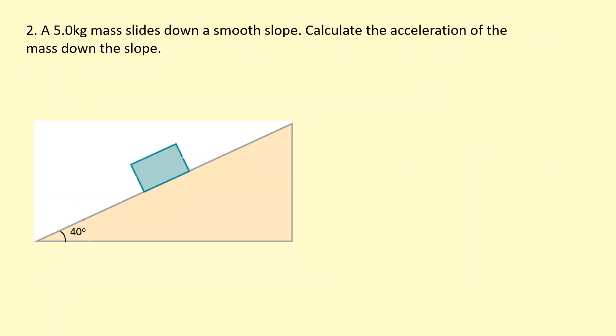A 5 kilogram mass slides down a smooth slope. Calculate the acceleration of the mass down the slope. If I draw a free body diagram, we've got the normal reaction force acting perpendicular to the surface, and we've got weight acting downwards.